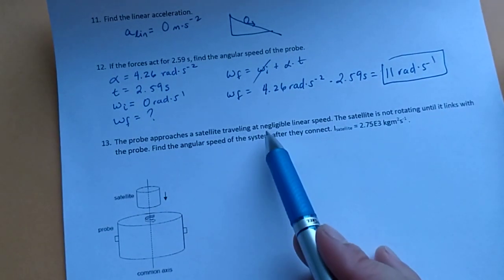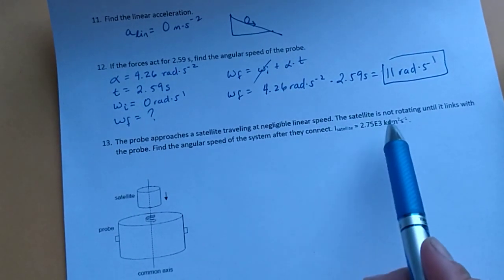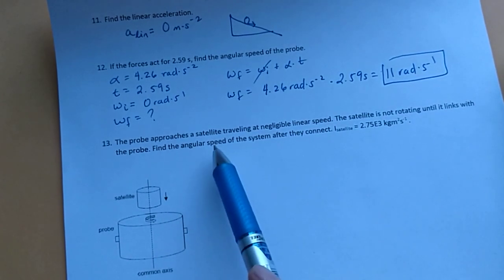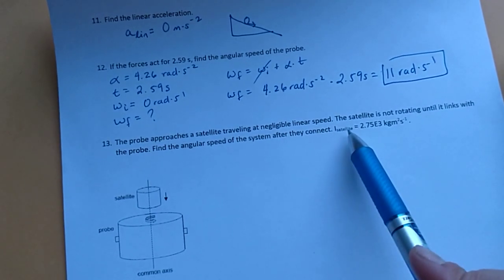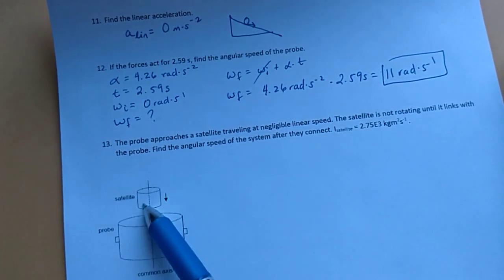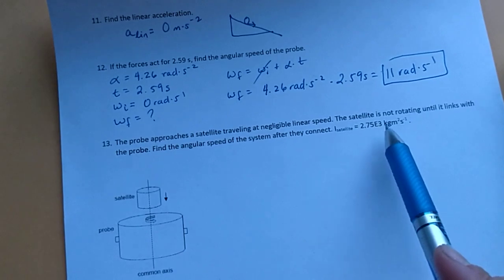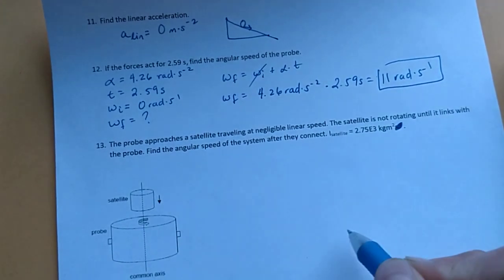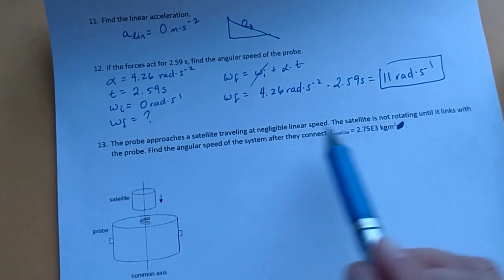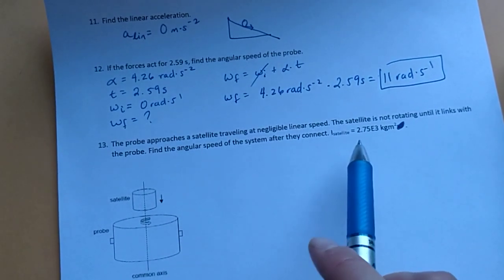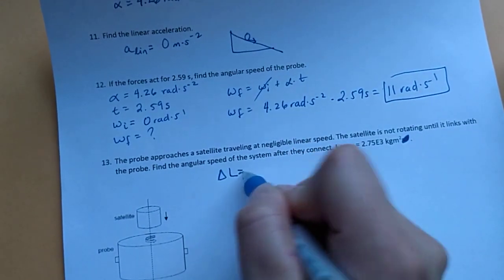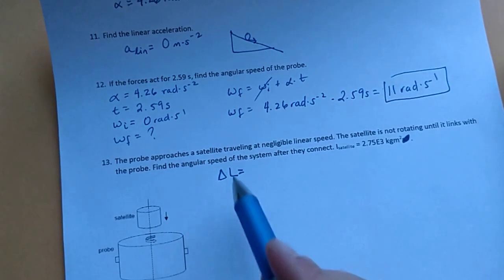And finally, the probe approaches a satellite traveling at negligible linear speed. The satellite is not rotating until it links with the probe. Find the angular speed of the system after they connect. The moment of inertia of this smaller satellite is 2.75 E3 kilogram meter squared. I don't know why these per seconds keep coming up. Sorry.